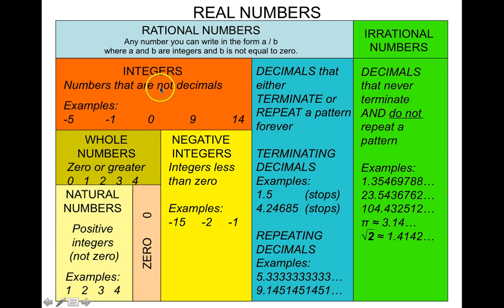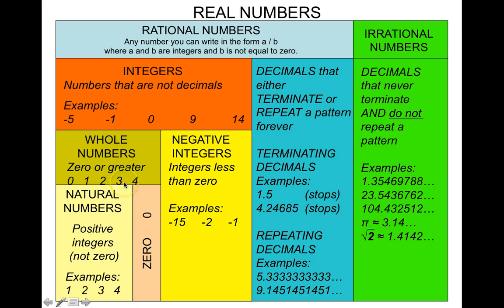The whole numbers and the negative integers together are all the different types of integers. The integers are considered rational numbers, and rational numbers are considered real numbers. For example, the number 3 is a natural number, a whole number, an integer, a rational number, and a real number.